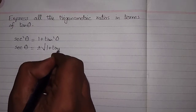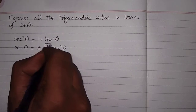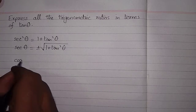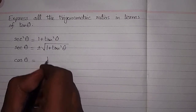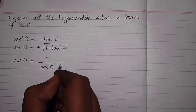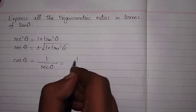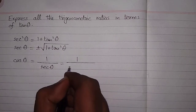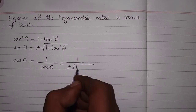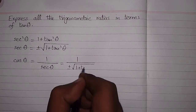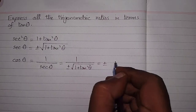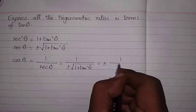Now cos theta is equal to 1 upon sec theta, so we can put the value of sec theta, which is plus or minus square root of 1 plus tan squared theta. So we have plus or minus 1 upon square root of 1 plus tan squared theta.